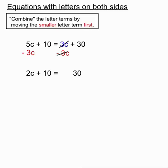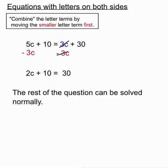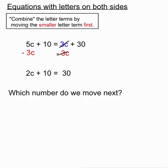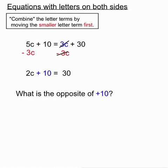You'll notice on that second line of working we have 2c plus 10 equals 30. That's just a normal typical two-step equation. From here on in we just solve the rest of the equation normally. We move that plus 10 next by doing minus 10 to both sides.